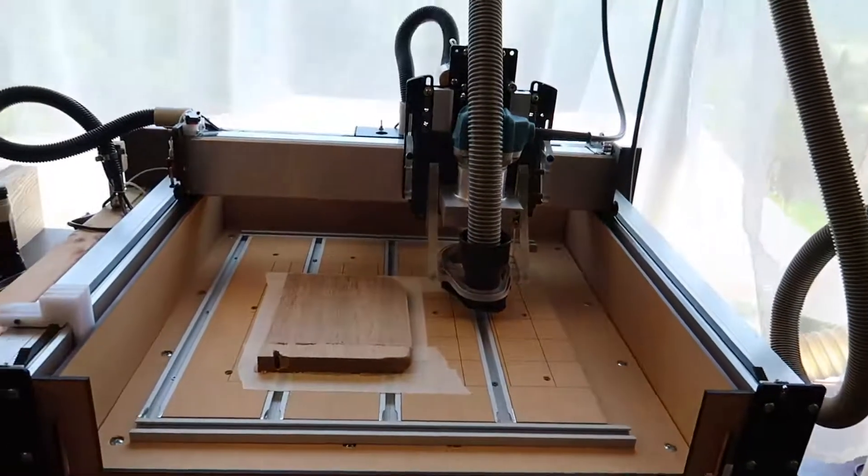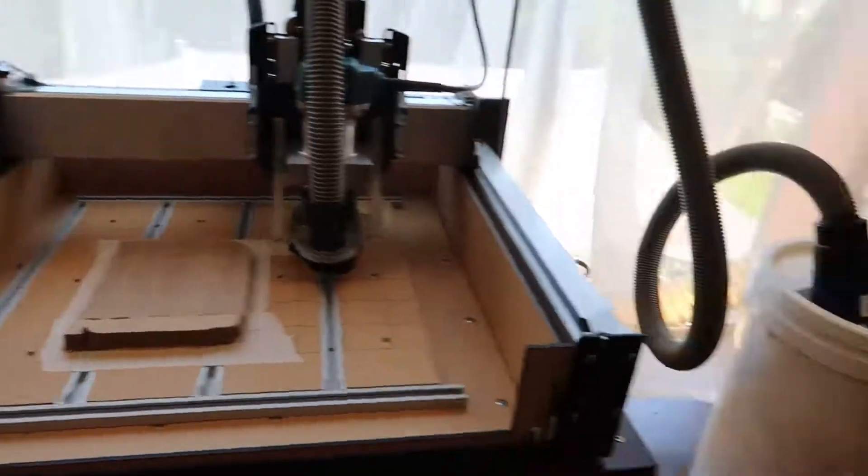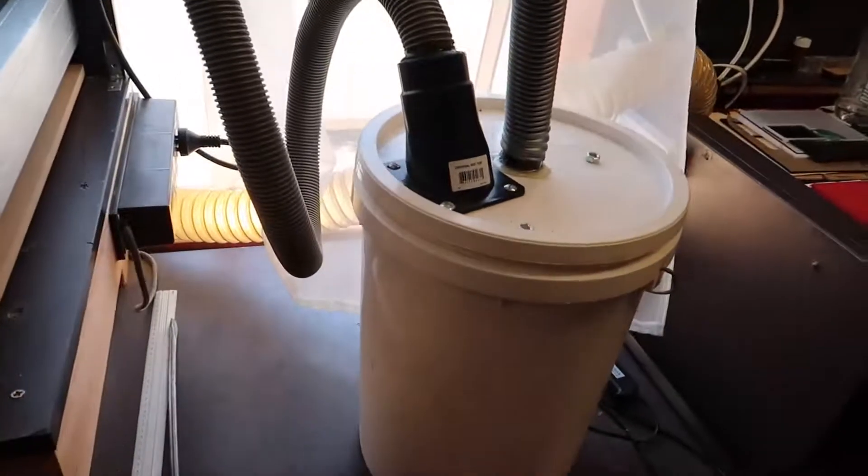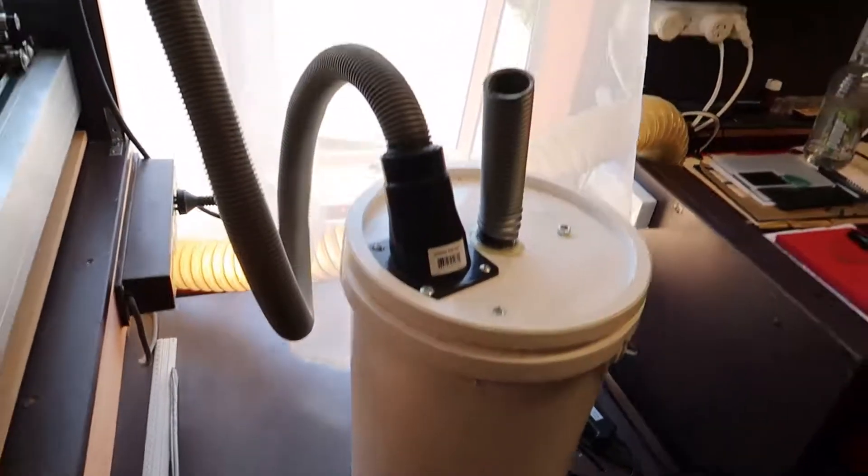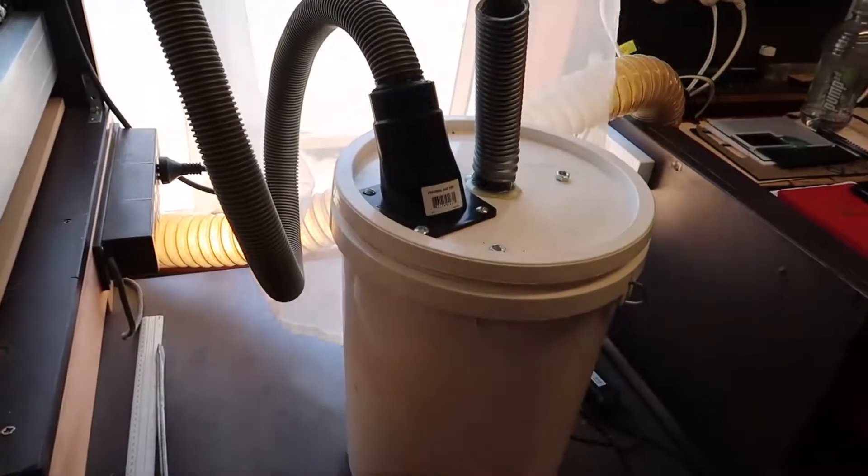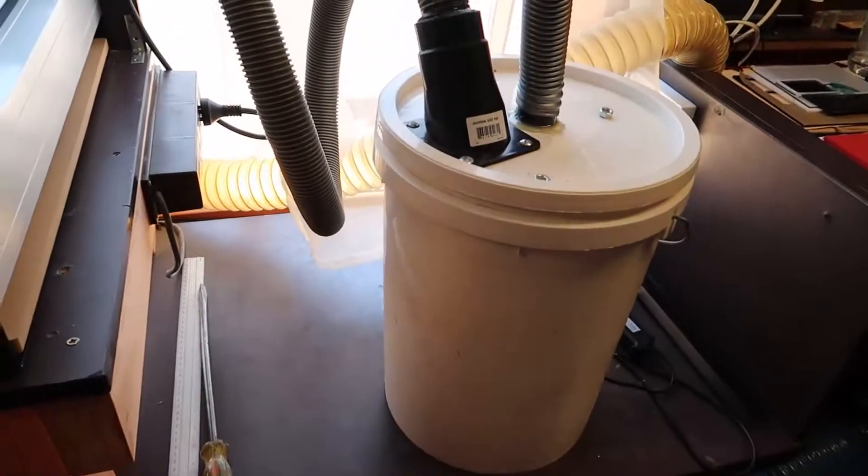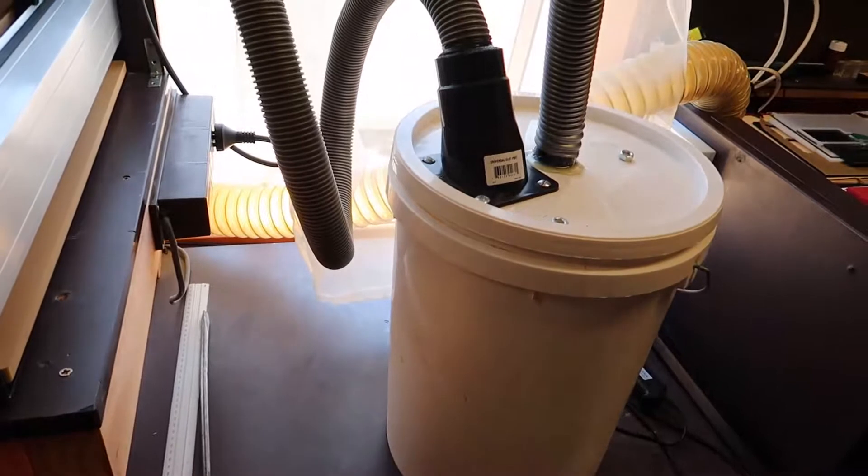I also use a dust collection cyclonic action vacuumy thing, so that works pretty good too. It keeps the majority of the sawdust out of my vacuum cleaner.